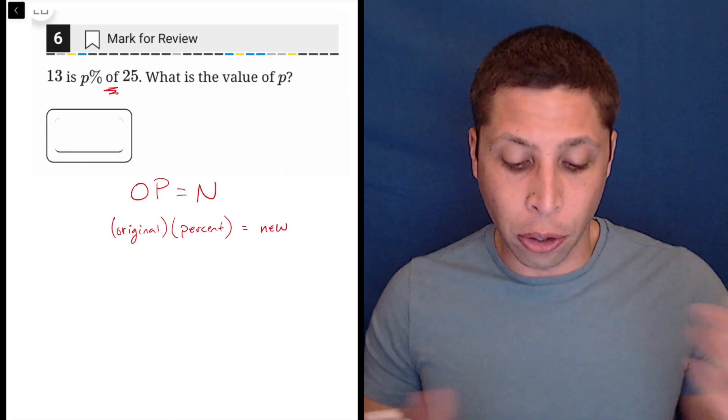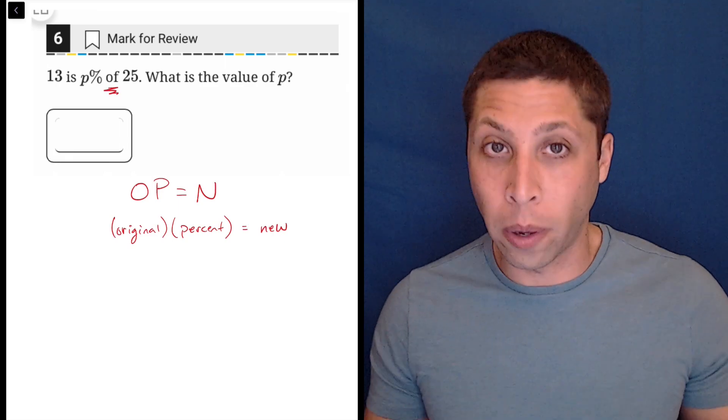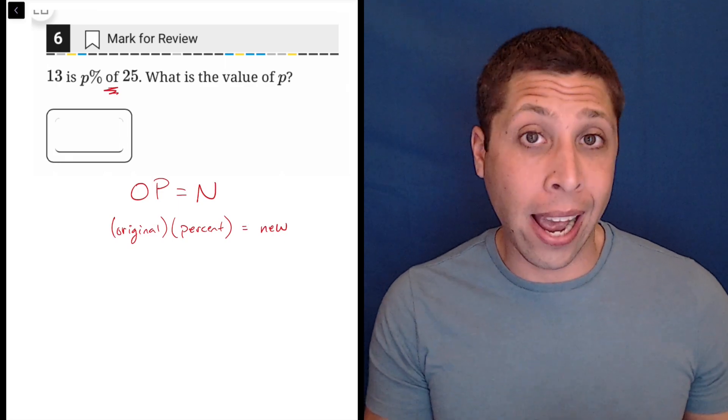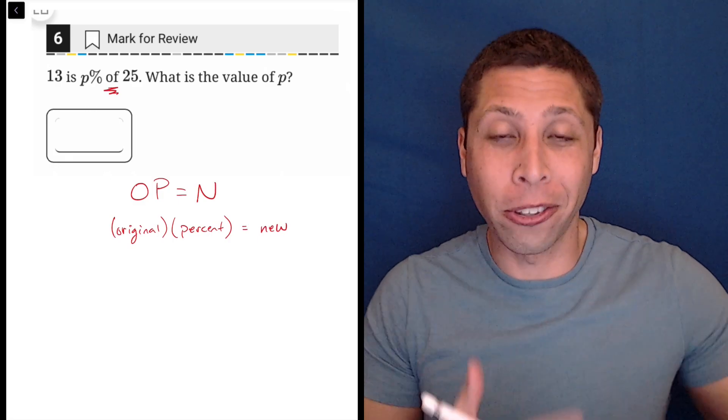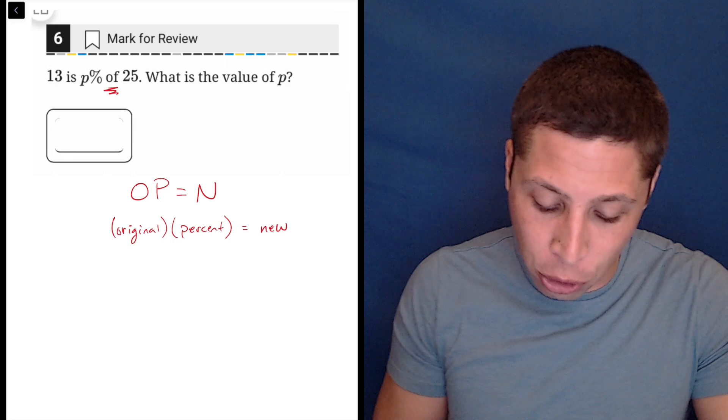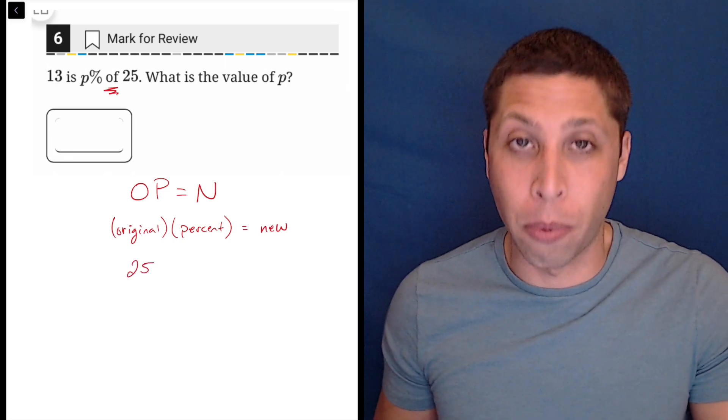So we're given those things. 13 is P percent of 25. So the 25 is our base value. That's our original. It's of 25, right? 13 is what percent of 25. The 25 is kind of our starting point.